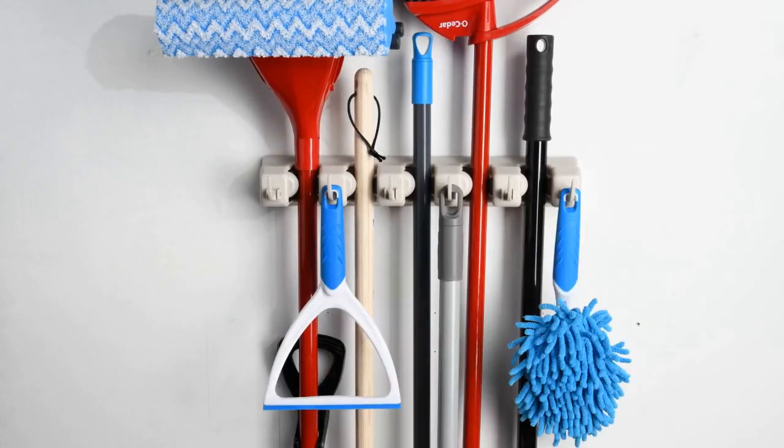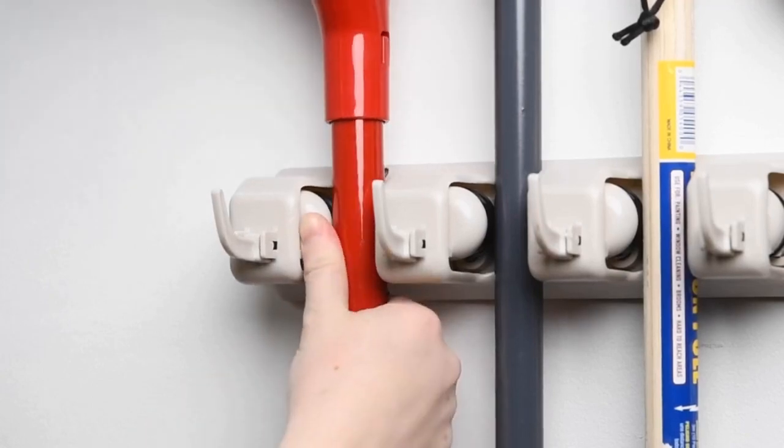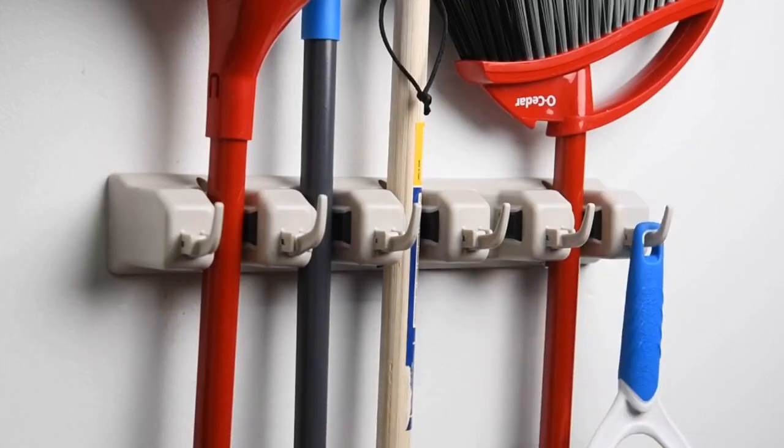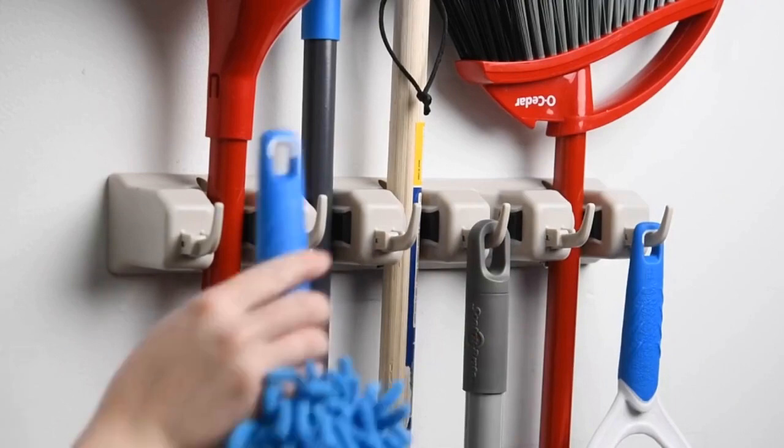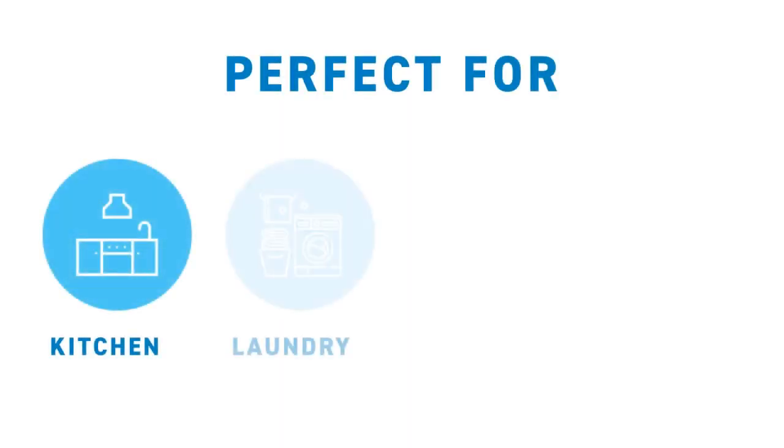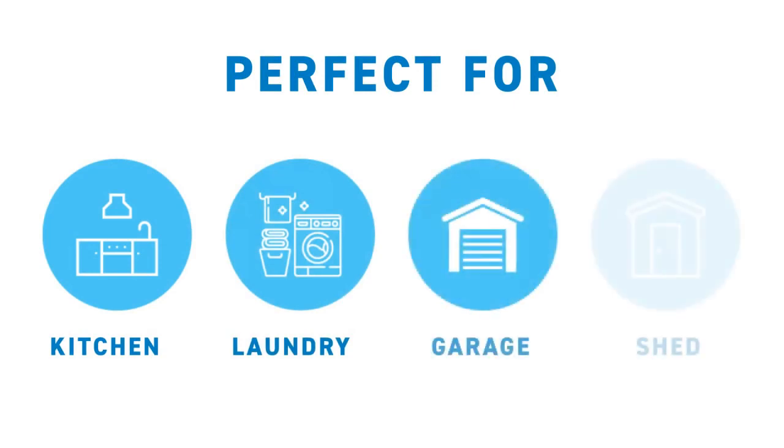Hanger for closet, garage organizer, shed organizer, basement storage. High quality, easy release by lifting the handle. Compact sizing and clean design. Garage organization system with wall mount broom organizer rack. Rolling balls automatically adjust to each handle's thickness and grip it securely.